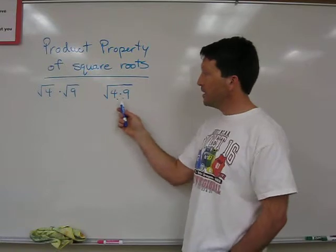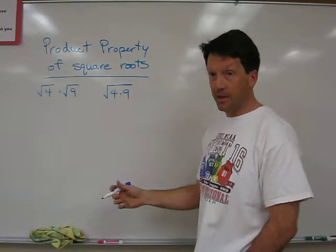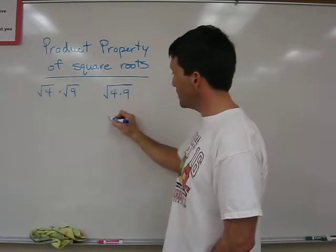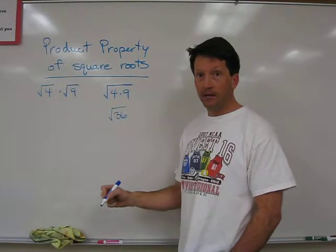If you think of these together under one radical sign, 4 times 9 is the same thing as 36. And then we know that the square root of 36 is 6.